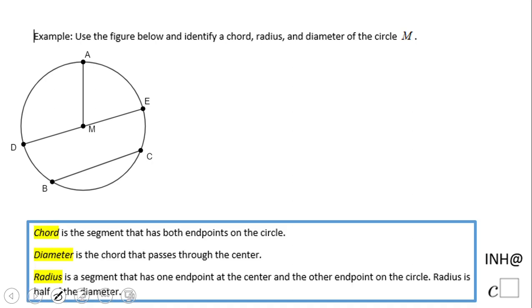Chord is the segment that has both endpoints on the circle. So we look in here and we want to find a segment that has both endpoints on the circle. So the first one that is in my mind is BC. BC is a chord because you see B is an endpoint and is on the circle, and C the same thing. So BC, this segment, is a chord.